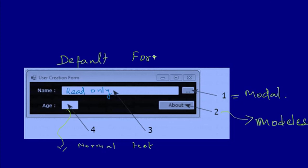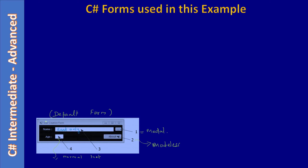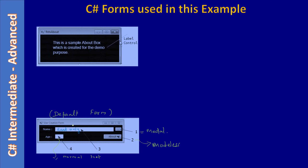Whenever we create a Windows Forms application a form is displayed by default, and we use that as our main form — we name it the user creation form. The about box will be displayed as a modeless dialog whenever the about button is clicked. The about box has just one label control with multi-line text spanning three lines. You will also learn a technique for editing a multi-line label at design time.